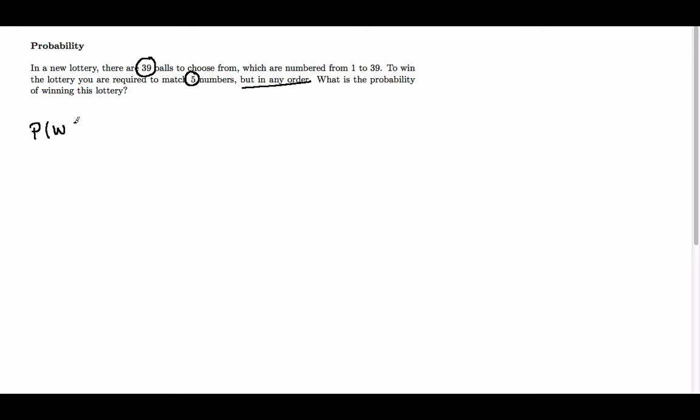So the probability of winning is given by the following. To match the first ball we have 5 out of 39. So the probability of getting the first ball is 5 over 39.